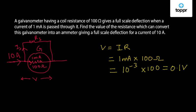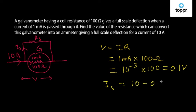Now we have to find out the value of the shunt resistance. First we will find out the value of the current which passes through the shunt resistance. It can be found by subtracting the current through the galvanometer from the total current — that is 10 minus 0.001 ampere — which equals 9.999 ampere.